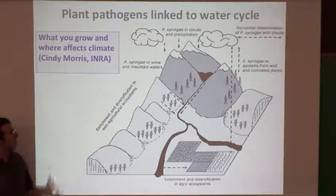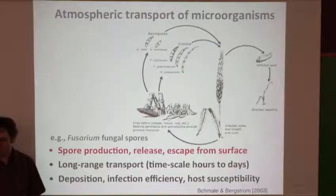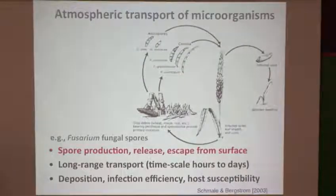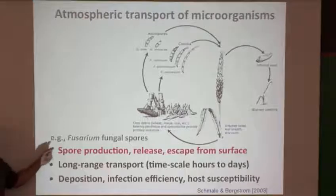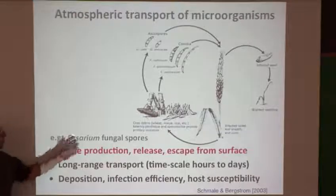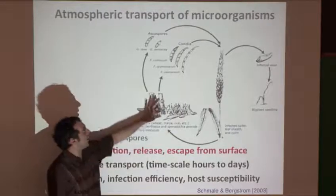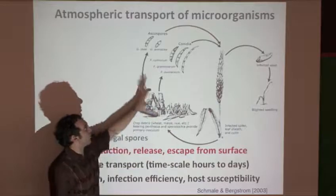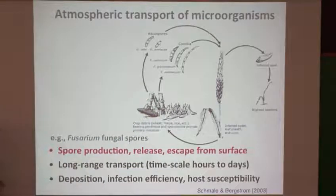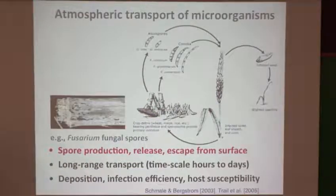The implication is that we can influence how rainy a microclimate is just by controlling which plants we grow. You can rotate crops year by year and change the climate. Our group has focused on fungal spores of the genus Fusarium, which are found in dead debris. The life cycle involves dead debris producing spores.